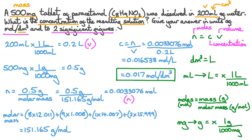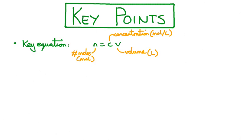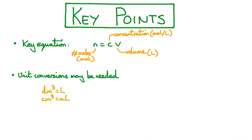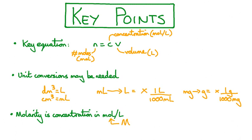Let's review the key points. The key equation for calculating concentration is N equals CV, where N is the number of moles, C is the concentration, and V is the volume — with units of moles, moles per litre, and litres respectively. Unit conversions may be required: decimetres cubed are exactly equal to litres, and centimetres cubed are exactly equal to millilitres. To convert millilitres into litres, multiply by one litre per thousand millilitres; similarly, to convert milligrams into grams, multiply by one gram per thousand milligrams. Molarity means the concentration in moles per litre, also written as a capital M standing for molar.